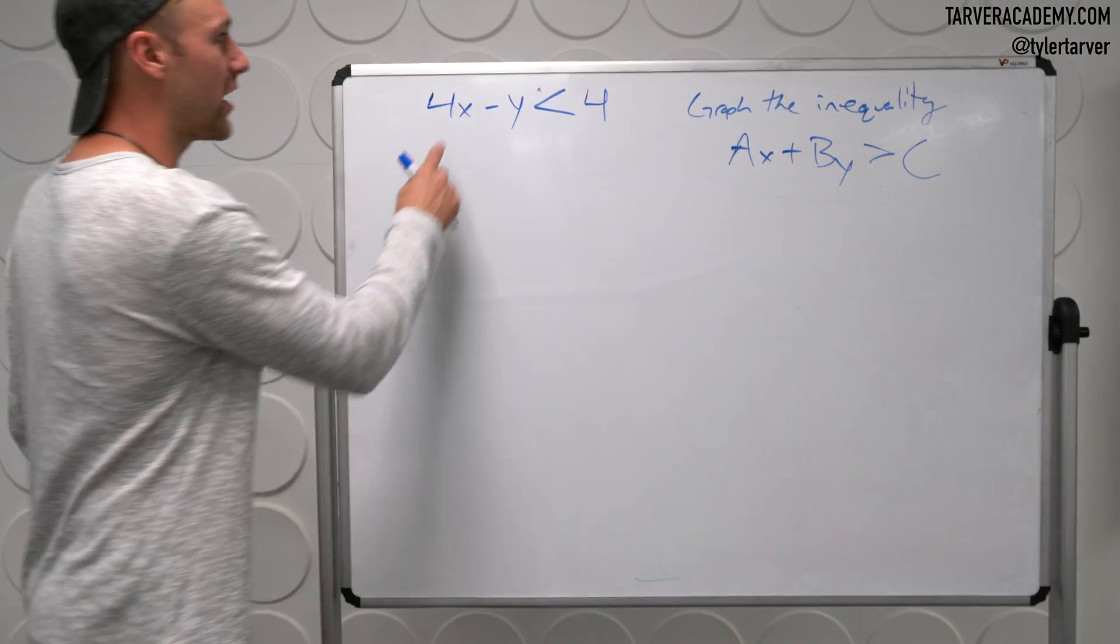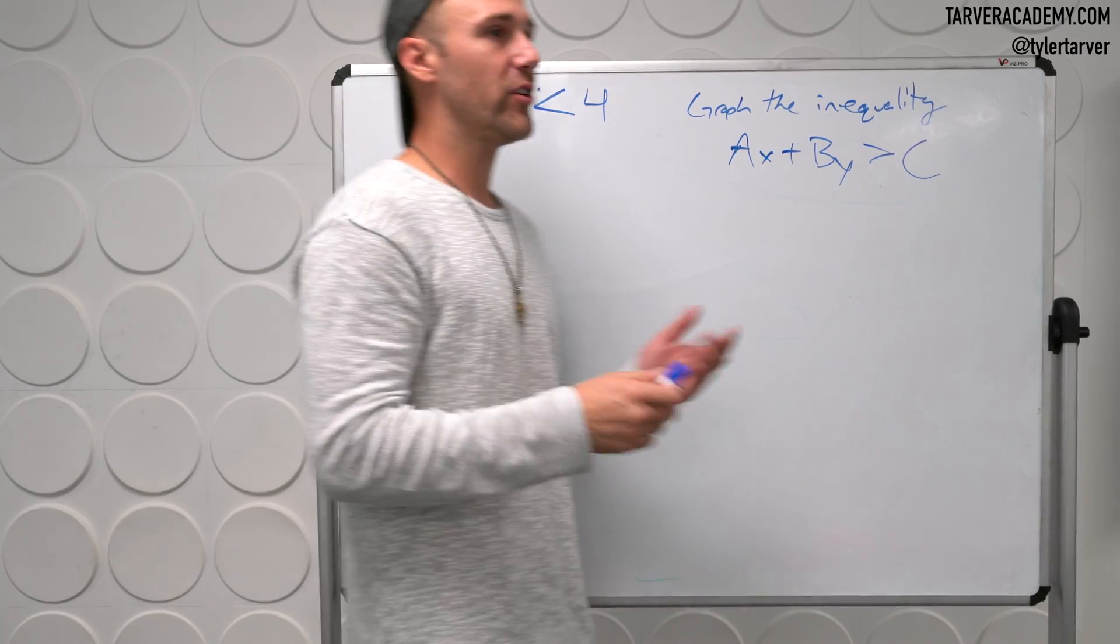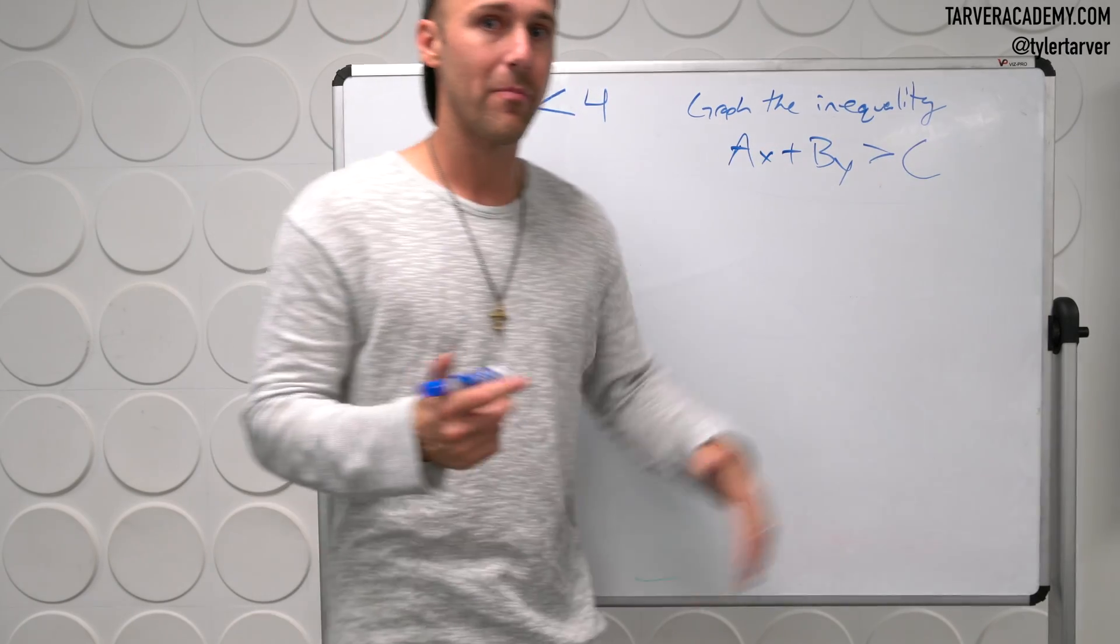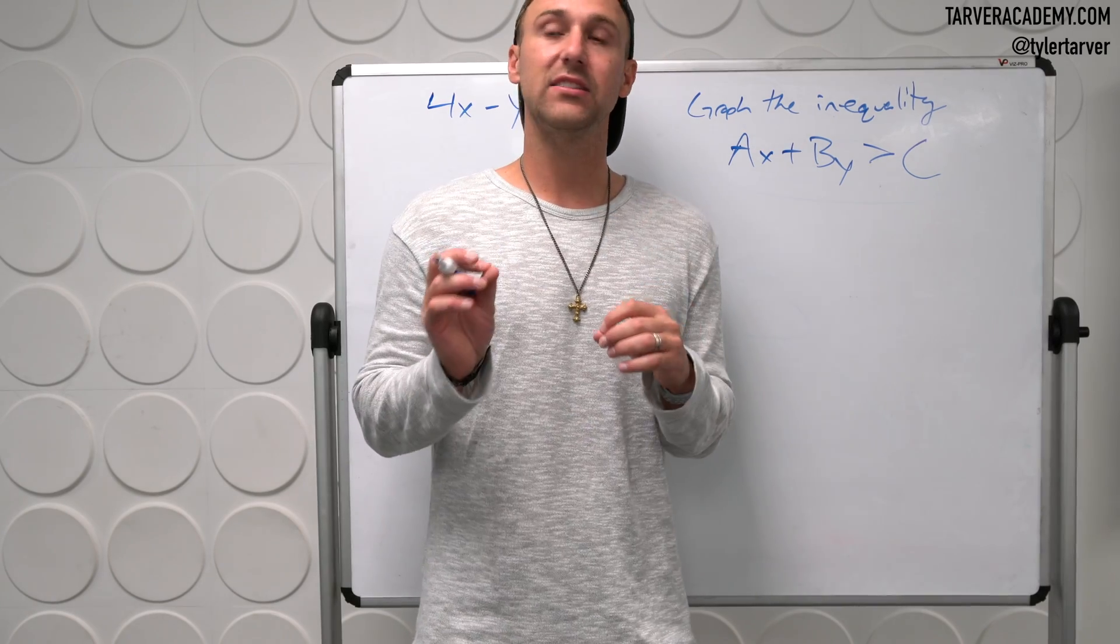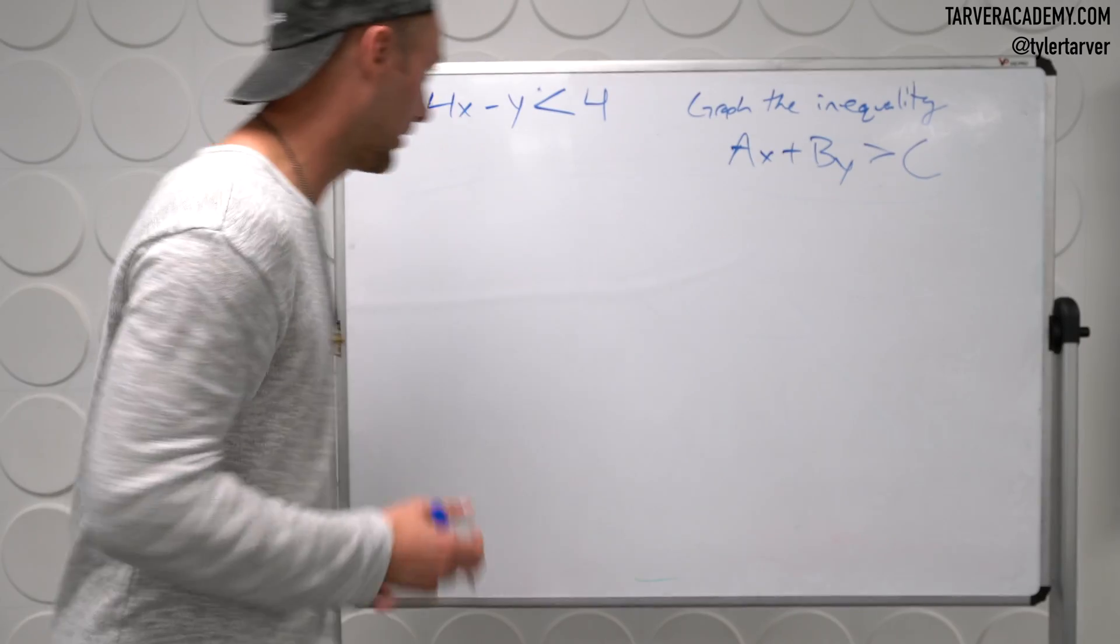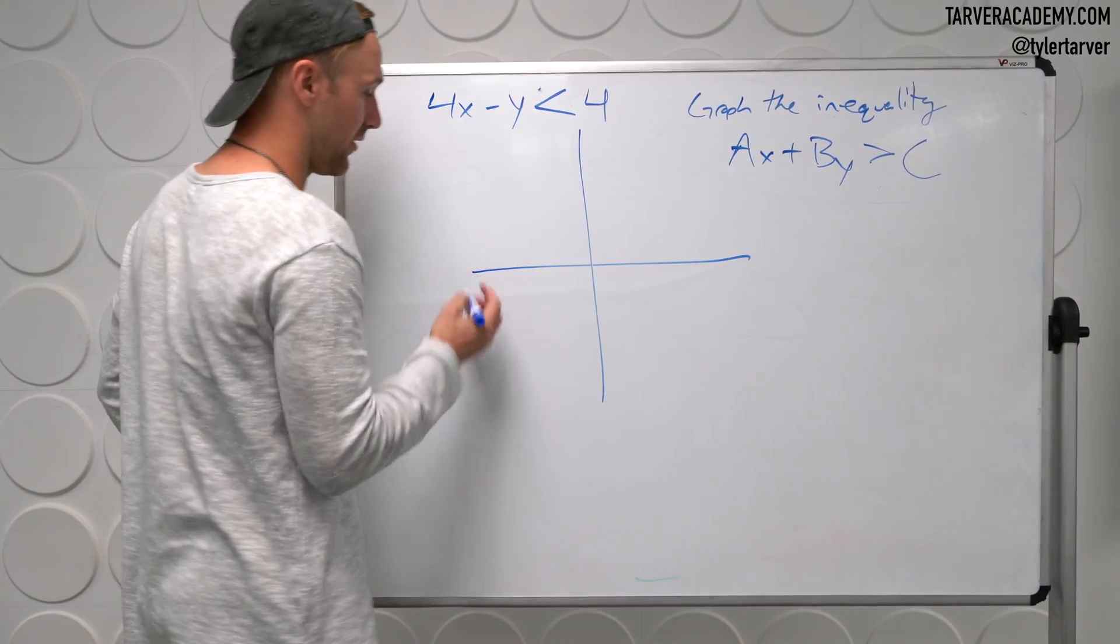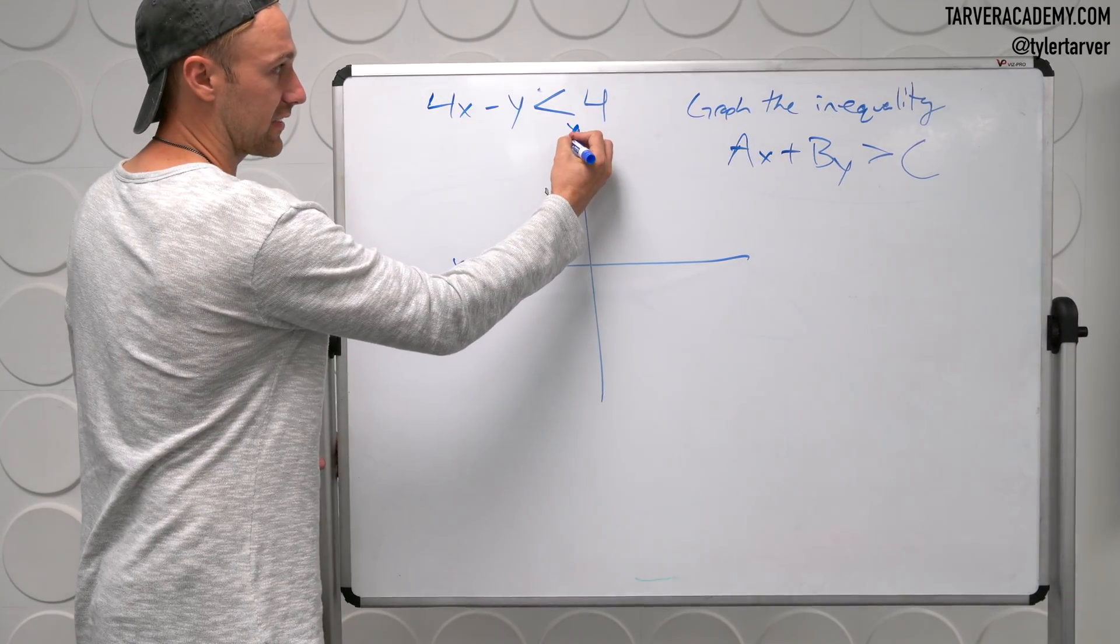Okay, so this equation is 4x minus y is less than 4. All right, whenever you do this, you can have it in slope-intercept form or what looks like standard form. It's whatever works best for you. Standard form is really easy, I think, because it's easy to find the x and y-intercepts, which makes it easy to graph. Okay, so let's look at this problem. We've got our graph. We've got our x-axis. We've got our y-axis, which looks like an x-axis the way I wrote it.